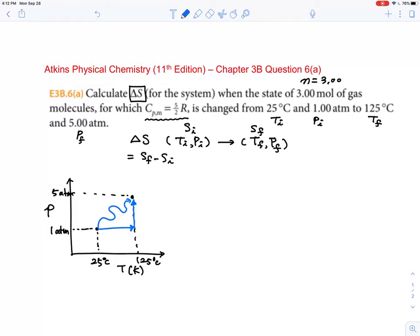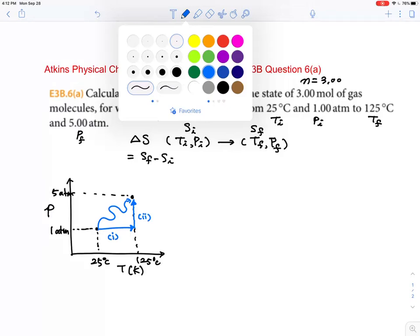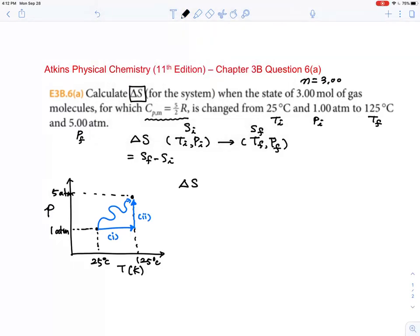So this is stage number one, and this is stage number two. The delta S for the process above is a summation of two processes: one is constant pressure process, and the second one is a constant isothermal process. This is constant pressure, this is isothermal.